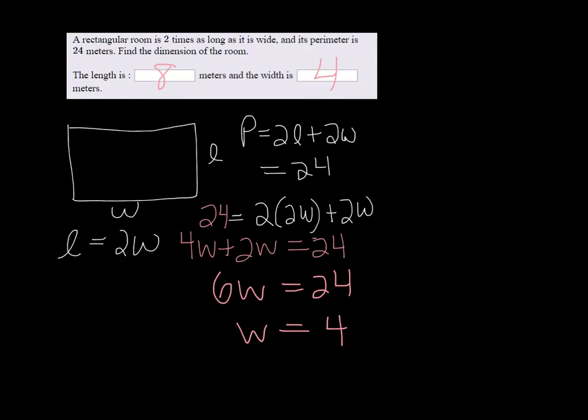You can verify that this is correct, because we know that the perimeter must be 24. So if you do twice 4 plus twice 8, that's equal to 8 plus 16, that's 24. So that's our check to make sure that we're correct.